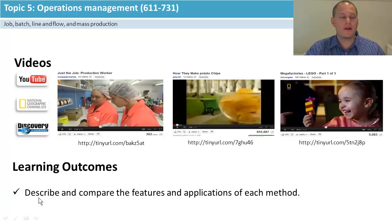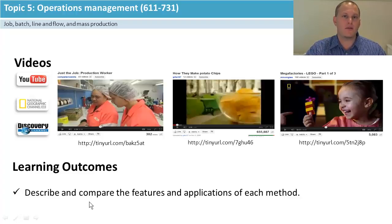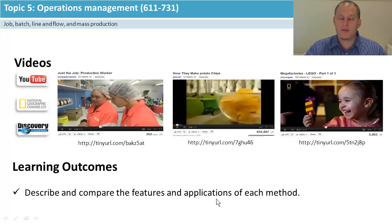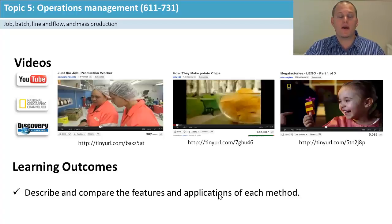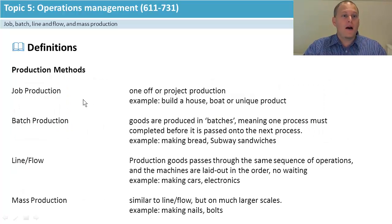What you need to know: can you describe job, batch, mass and flow? Can you compare between all four production methods — five if you count line and flow separately? Can you apply it to a case, and talk about changing from say job to mass, or back from flow to job if they're changing their branding?